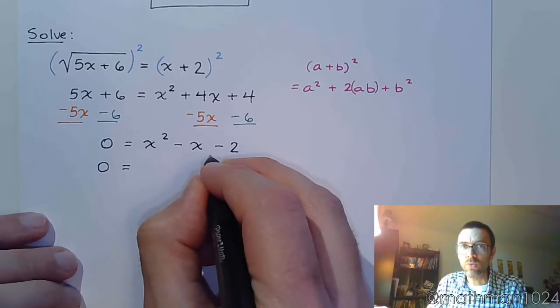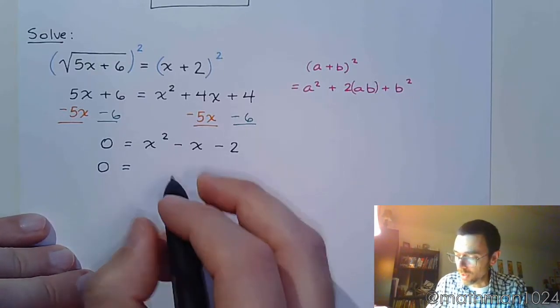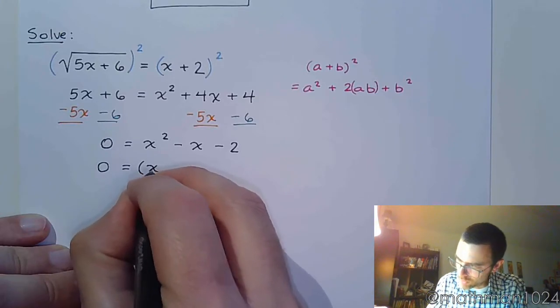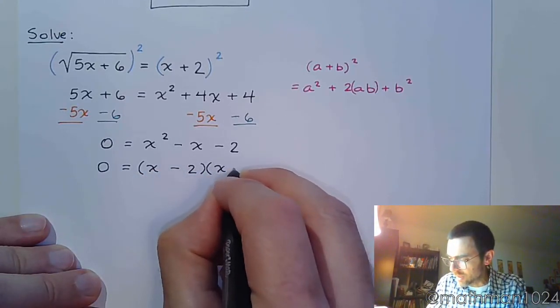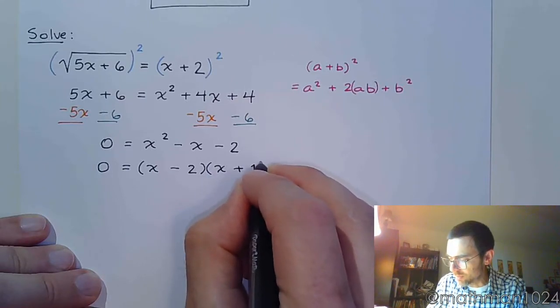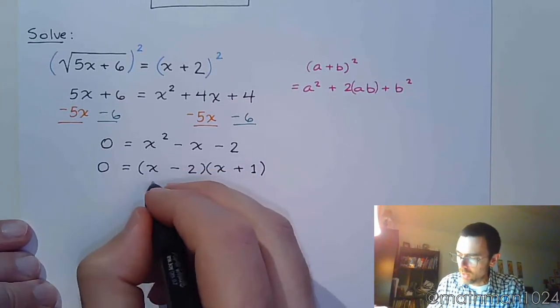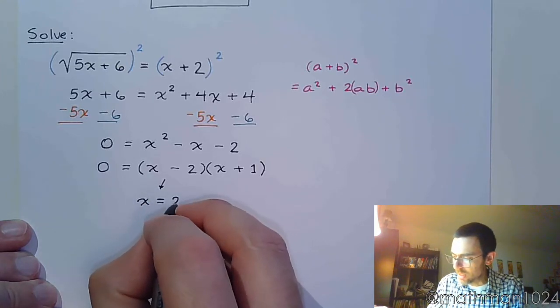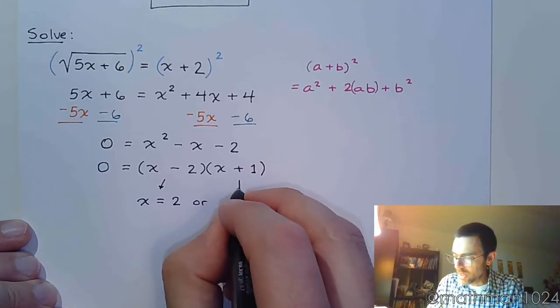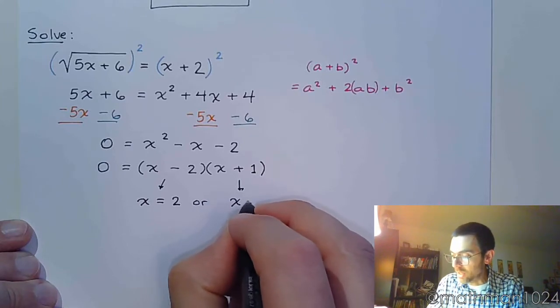The factors of 2 that subtract 1, well, the only factors of 2 are 1 and 2. And that is exactly what we need. So this is x minus 2 times x plus 1. And we finish solving this by using the zero factor theorem. x equals 2 or x equals negative 1.